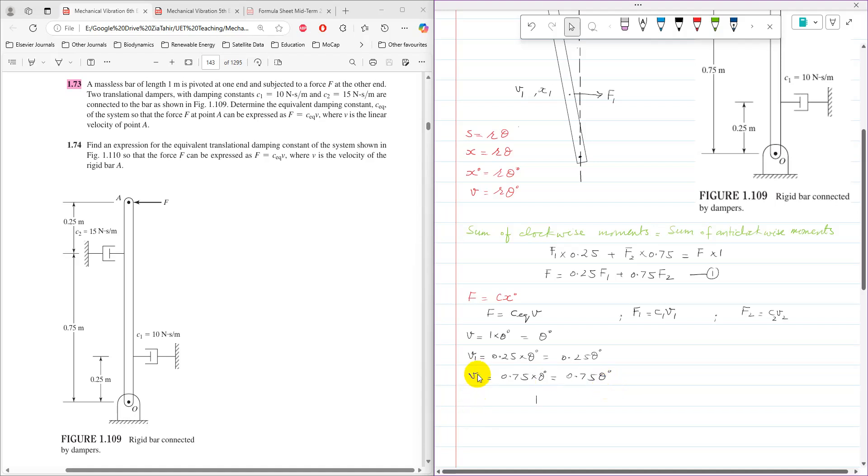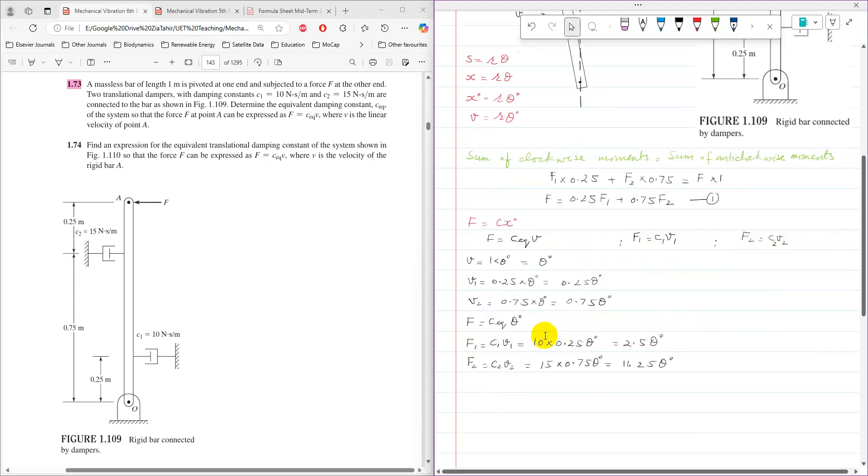Once I have these velocities in terms of a common variable, I can substitute to get F, F1, and F2. F equals C_equivalent times theta dot. F1 equals C1 times V1, so C1 is 10 and V1 is 0.25 theta dot, giving 2.5 theta dot.